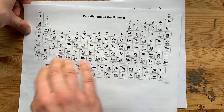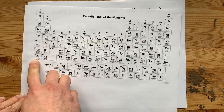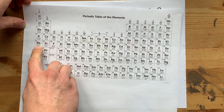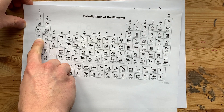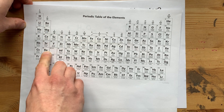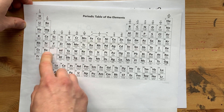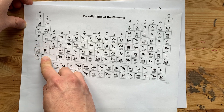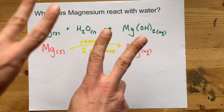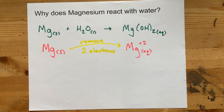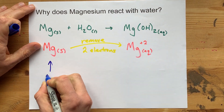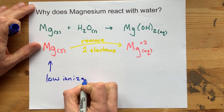Francium reacts with water instantly — at least we all imagine so; it's too radioactive and rare for us to have tested that out. Cesium is very reactive with water. Rubidium, also reactive but less so. And the same pattern continues down this column as well. The lowest ionization energies are found down here, and magnesium is kind of in that zone. Magnesium wants to give up some electrons. The key word your teacher is looking for is that Mg has low ionization energy.